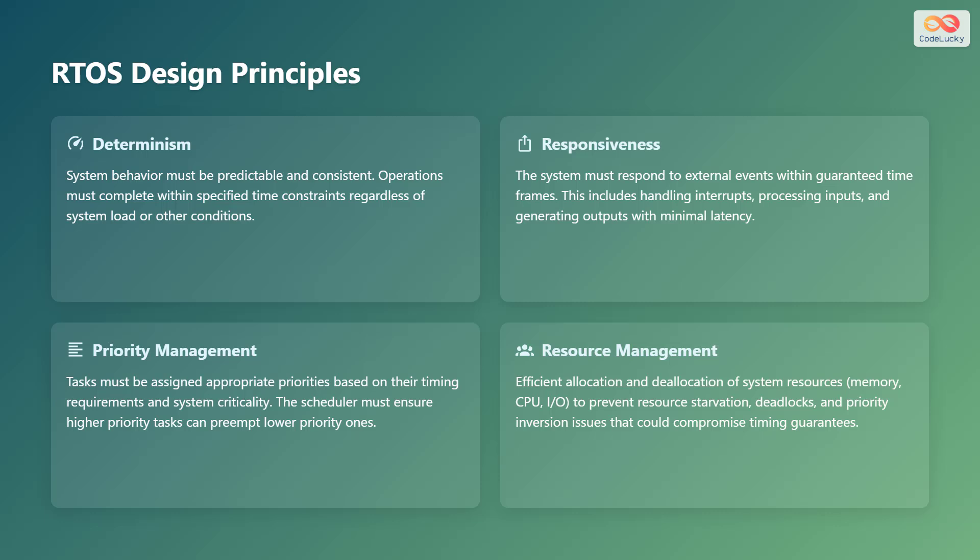Priority management is also important. Tasks must be assigned appropriate priorities based on their timing requirements and system criticality, and the scheduler must ensure higher priority tasks can take precedence over lower priority ones. Finally, resource management — efficient allocation and deallocation of system resources like memory, CPU, and I/O is crucial to prevent resource starvation, deadlocks, and priority inversion issues that could compromise timing guarantees.